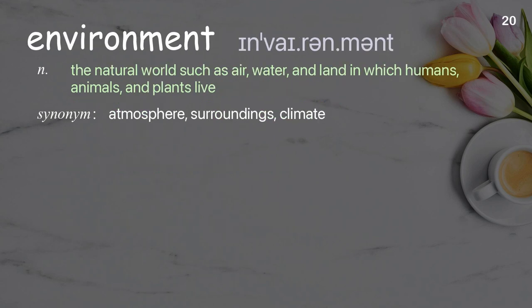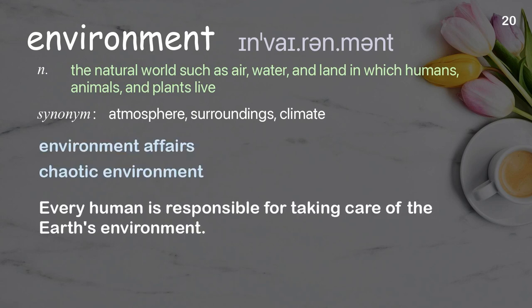Environment: The natural world such as air, water, and land in which humans, animals, and plants live. Examples: Environment affairs, chaotic environment. Every human is responsible for taking care of the Earth's environment.